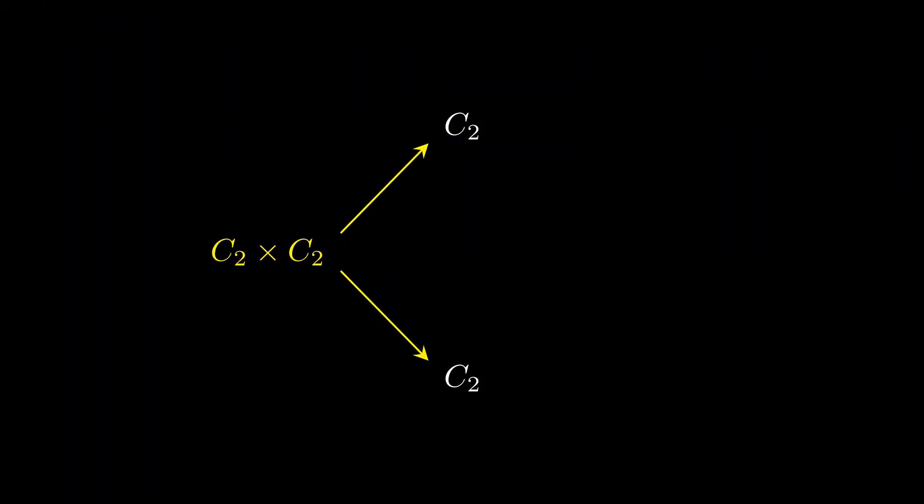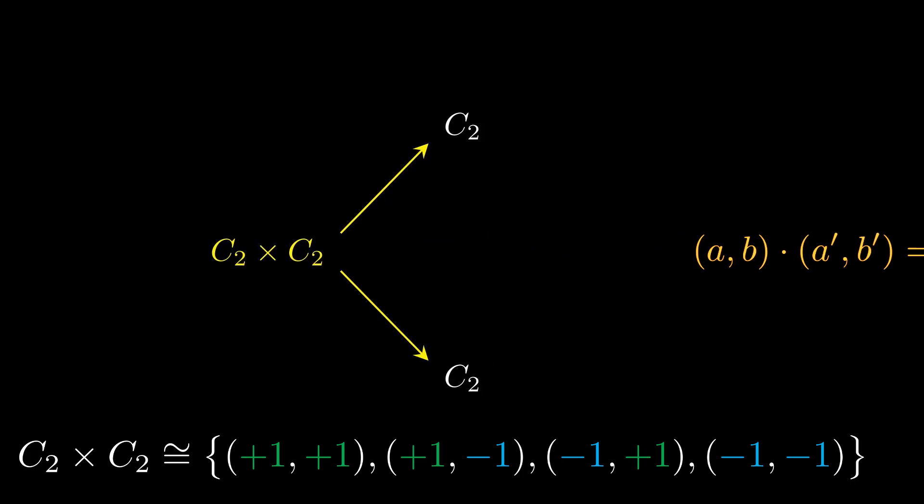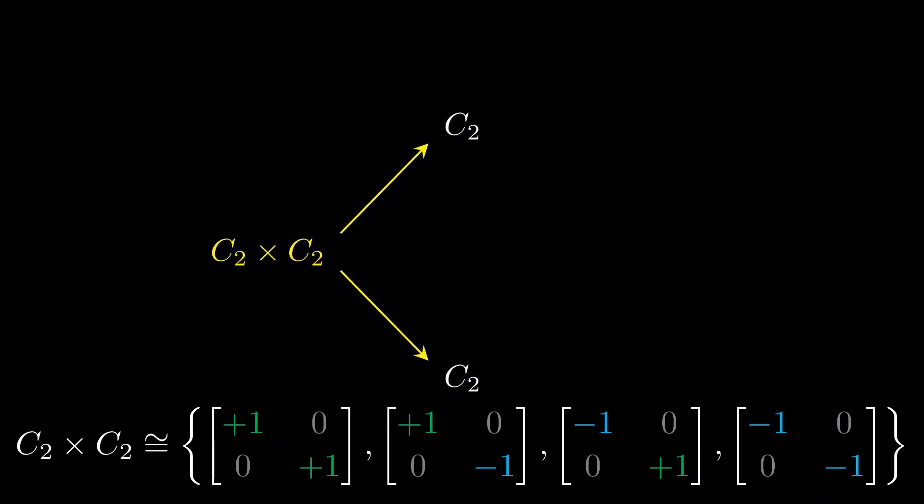My diagram of interest is the diagram with two copies of C2. Before we contemplate the colimit of this diagram, let's look at the diagram's limit. If you recall from the previous video, the limit of this diagram is called the product of the two copies of C2. The product monoid has 2 times 2, or 4, elements corresponding to all possible pairs of elements from C2.